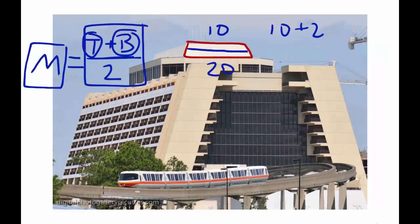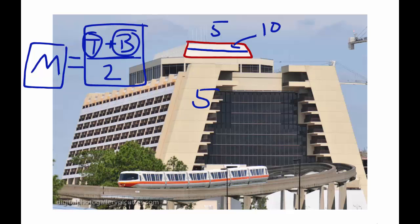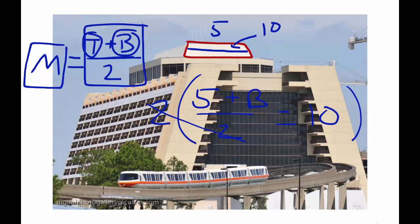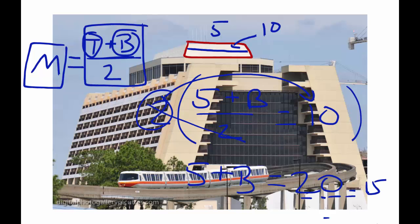If instead you're given that the top is 5 and the median is 10, you set up: 5 plus the bottom divided by 2 equals 10. Multiply both sides by 2 to cancel the denominator, giving 5 plus the bottom equals 20. So 20 minus 5 is 15, making the bottom length 15. You can also see that 15 is just as far from 10 as 5 is — the median is always equidistant in value from both the top and bottom.